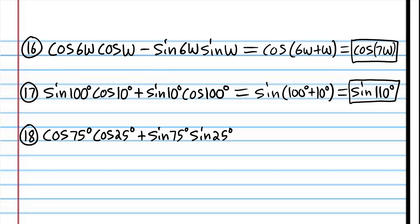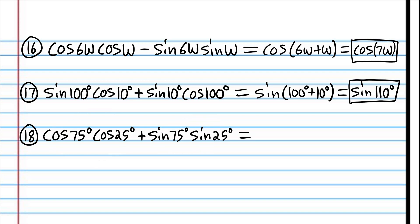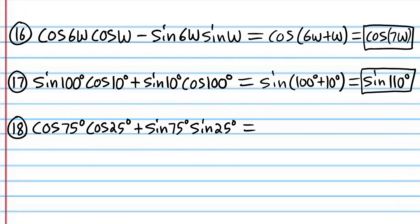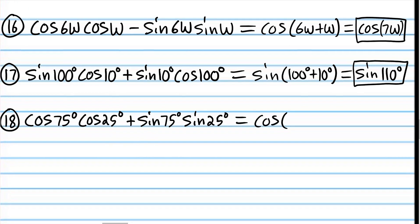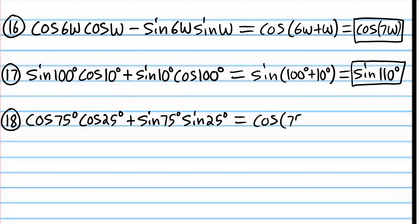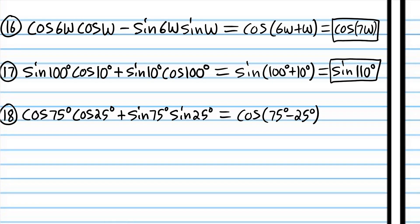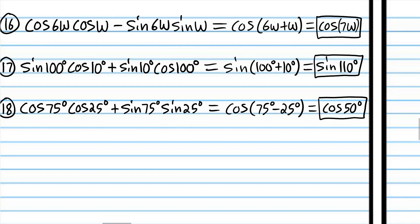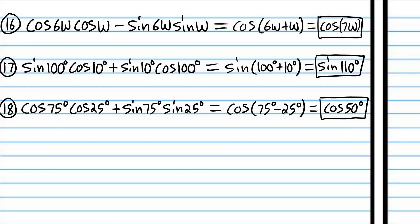Try number 18 and when you come back we'll do it together. We're back. We have a product of cosines and a product of sines, so we're going to use the cosine function. We have an addition symbol so we use the opposite sign — we subtract: 75 degrees minus 25 degrees gives cosine(50°). We don't need parentheses in that case.